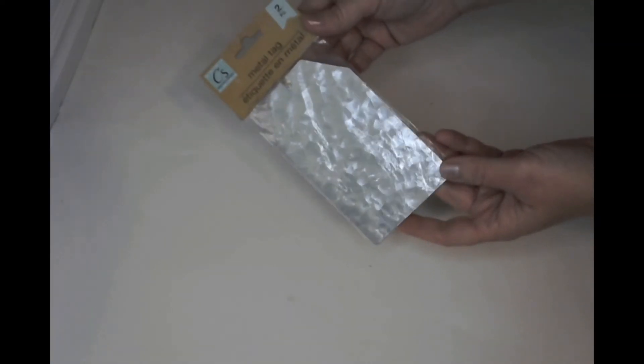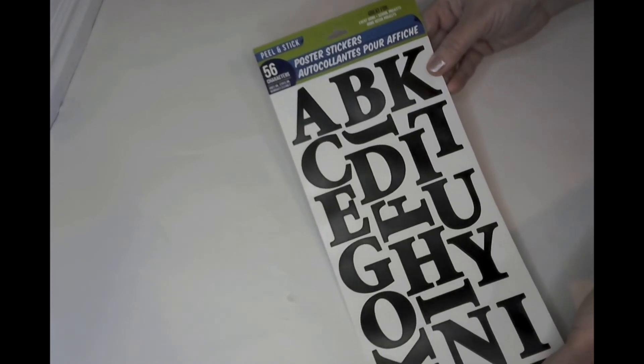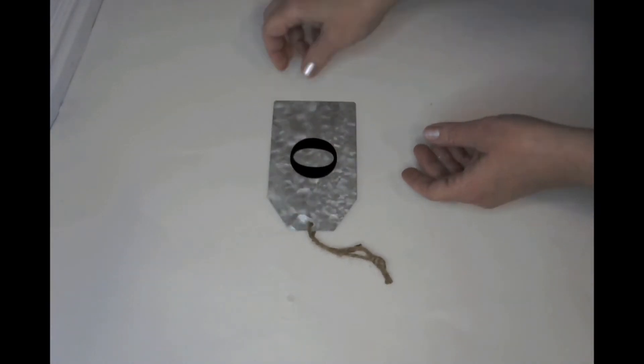For our second project that I saw on Facebook, we're going to need the metal tags, some alphabet stickers. These ones are from the Dollar Tree, but you can also find smaller alphabet stickers. Optional is some ribbon of your choice, and then if you want, you can also use a button. So what I did here is I started by putting the O in the middle for Joy, so that way it's kind of evenly spaced. And then I'm just going to take these alphabet stickers.